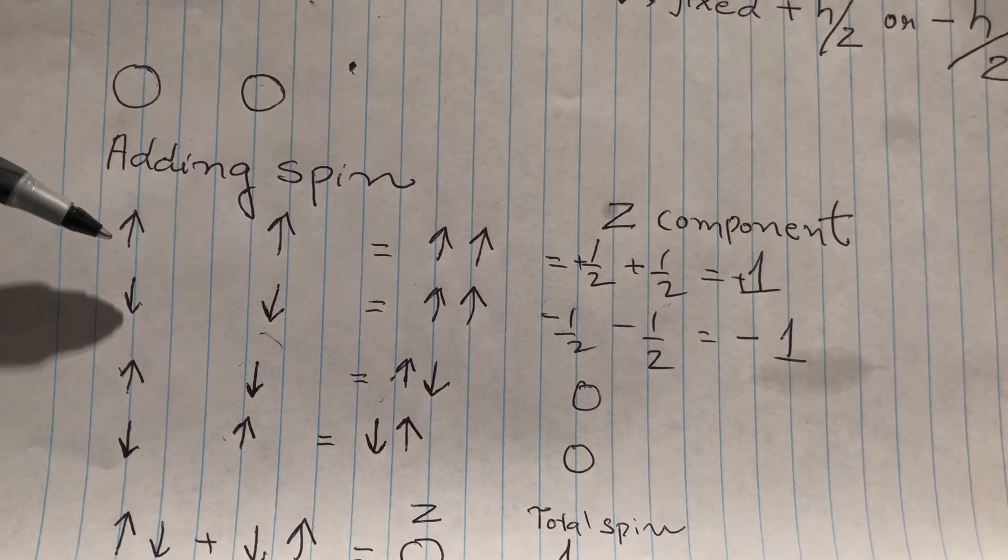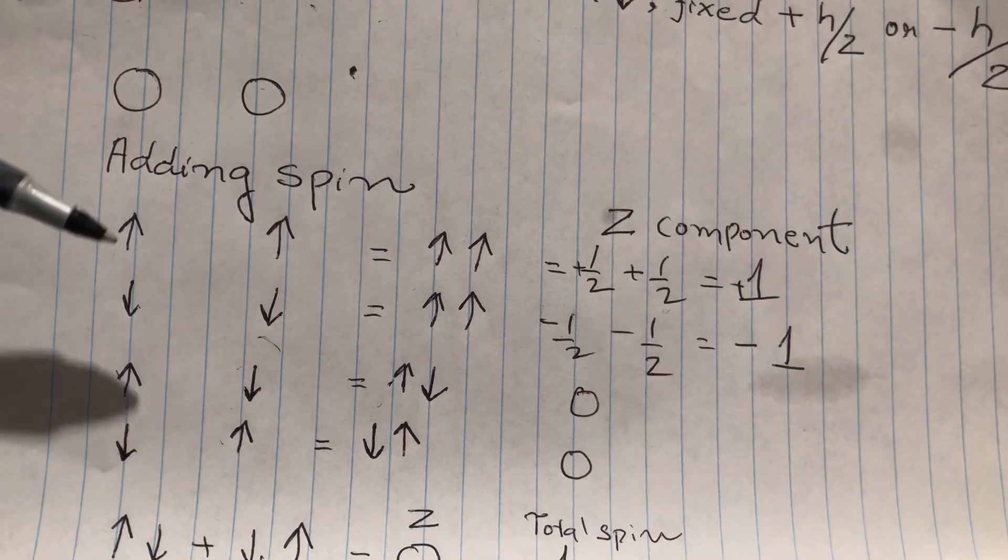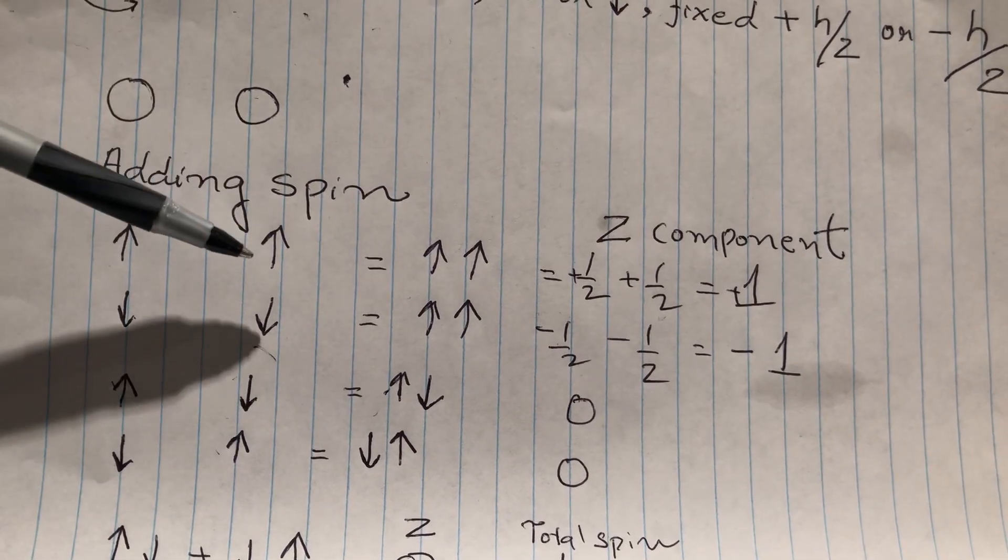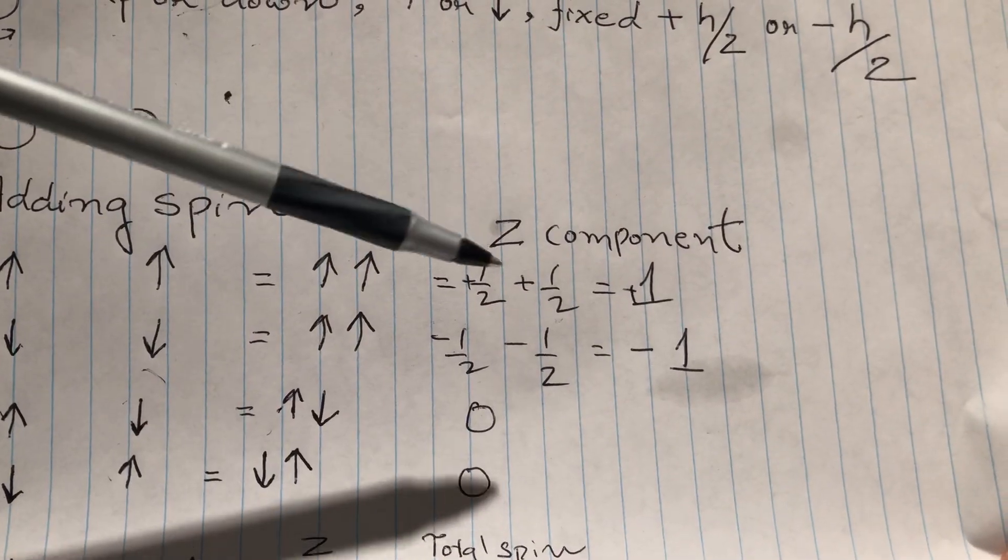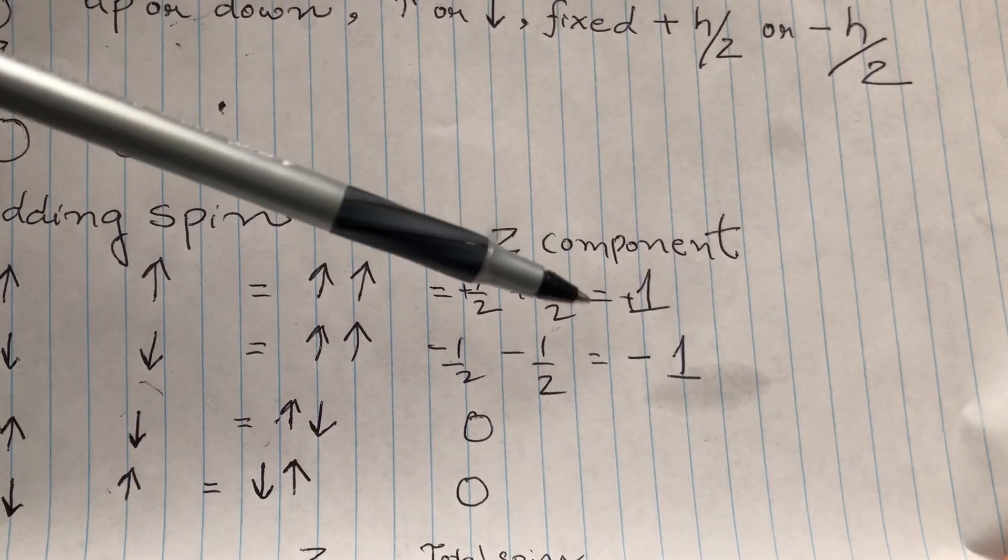What are the possibilities? The electron one could have upspin, electron two could have upspin. And so up and up, plus half and plus half, so z component is plus one.